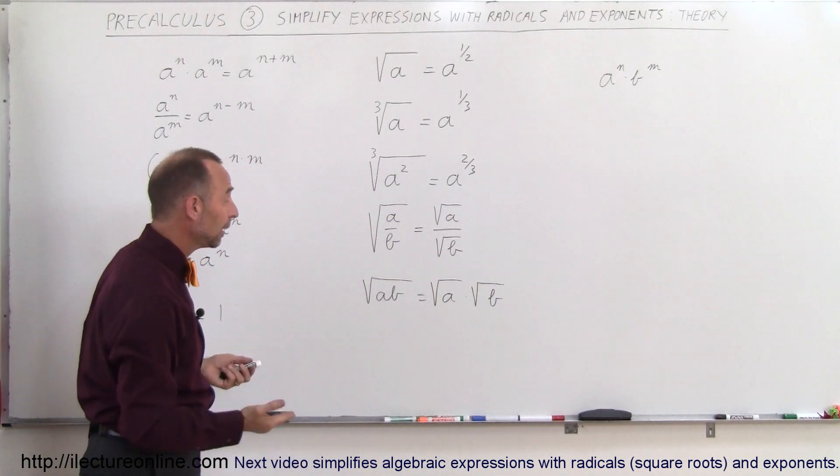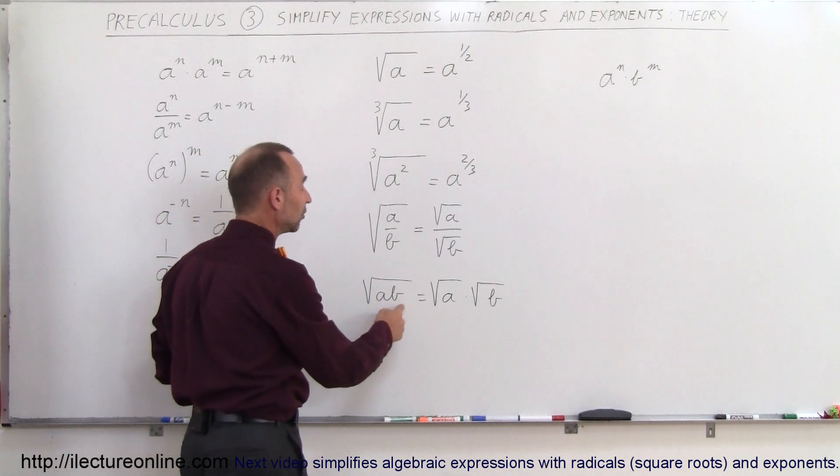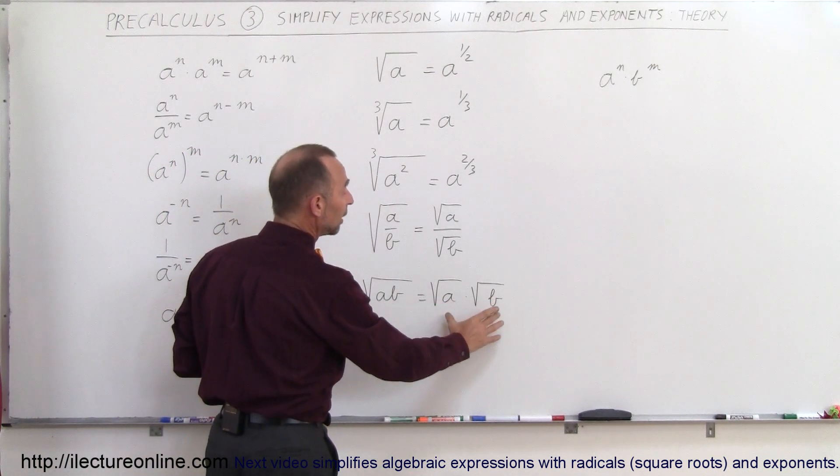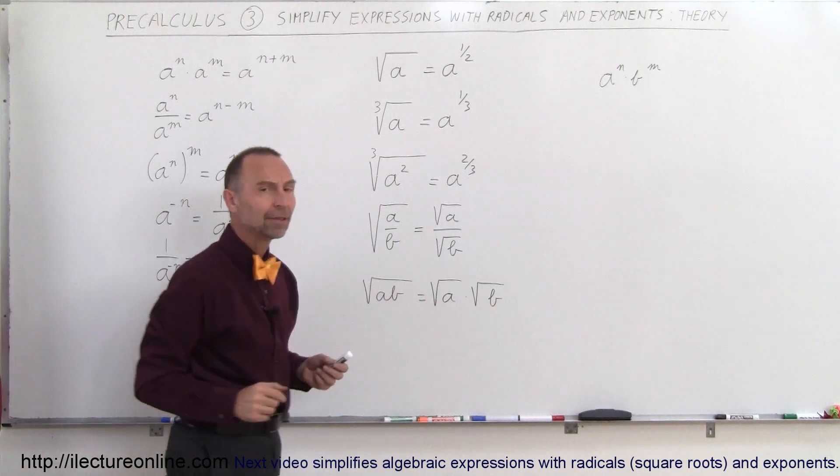The same thing when we're multiplying the square root of A times B can be written as the square root of A times the square root of B. Or if you have it written like this, you can go back and make it look like that.